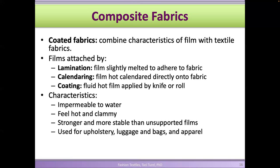You can attach the film to the fabric by lamination, calendering, or coating. Lamination is when you melt the film to make it stick on the fabric surface. Calendering passes the material through hot cylinders that melt and stick the film onto the fabric surface. Coating uses a fluid film solution applied with a knife or roller. Because there's a film surface on top, coated fabrics are impermeable to water — a lot of wind parkas or rain coats are coated this way.